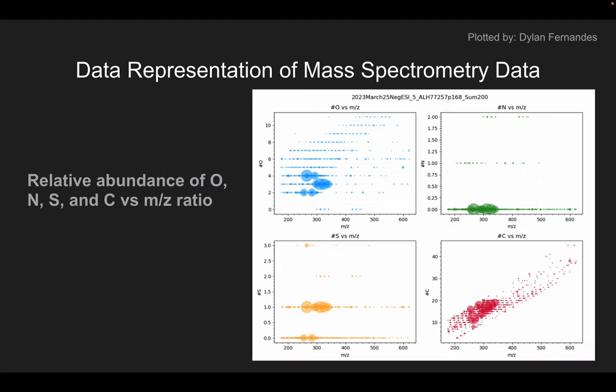The second type of plot compares the relative abundance of carbon, oxygen, nitrogen and sulfur to the mass to charge ratio, by which we can glean information about the distribution of the atoms and the different molecular compounds they are present in.